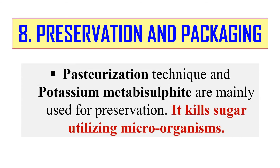Finally, preservation and packaging. Once the wine has been produced, it is pasteurized to kill microorganisms, and sometimes potassium metabisulfite is also used for preservation, wiping out sugar-utilizing microorganisms. Finally, it is packed into bottles, corked with oak, sealed on the outside, and is ready to ship to market.